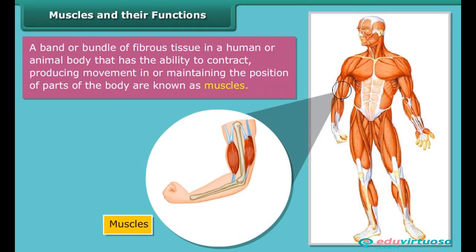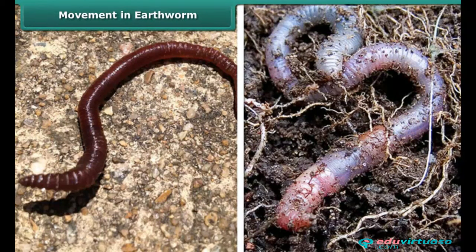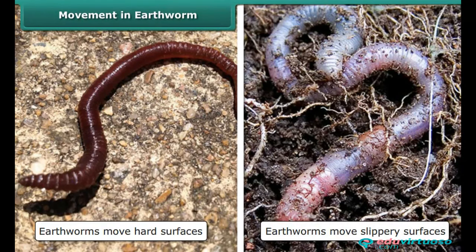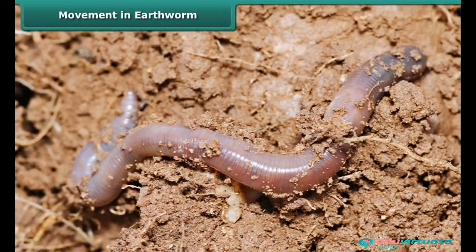The movement of the body is controlled by alternate contractions and relaxations of two sets of muscles. Earthworms move easily on hard and slippery surfaces. They have tiny, stiff hair-like projections called bristles under their body, which they use to grab the soil. Earthworms first stretch and then contract their muscles to move, covering only a small distance with every move. A slimy substance secreted by the earthworm also helps it to move.